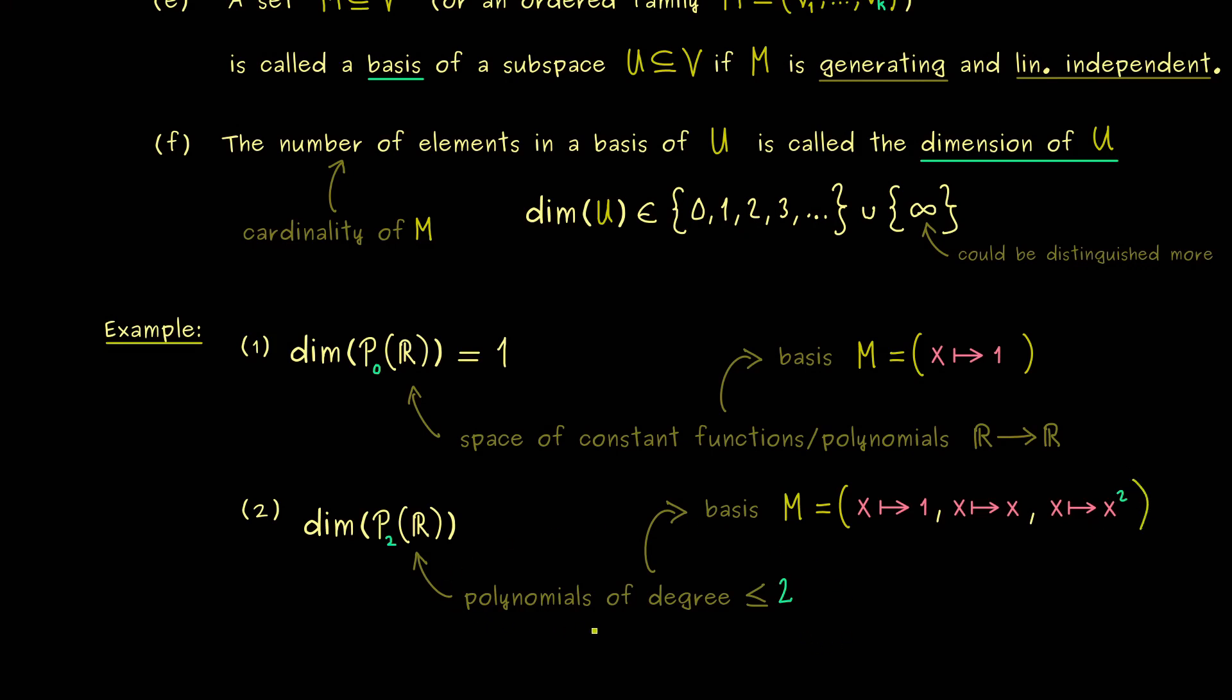And now you should immediately see, each polynomial here can be written as a linear combination of these monomials. And indeed, they are also linearly independent and we will talk about this later again. However, for the moment you should see, the dimension of P_2 is equal to 3.